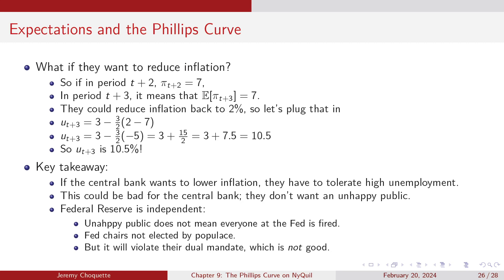Let's work through it. In period T+2, inflation is 7%, so in period T+3, expected inflation is 7%. The central bank wants to reduce it back to 2%. Plugging in: U_{T+3} = 3 − (3/2)(2 − 7) = 3 − (3/2)(−5) = 3 + 7.5 = 10.5%. If you want to reduce inflation from 7% to 2% in one period, you have to tolerate 10.5% unemployment.